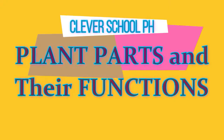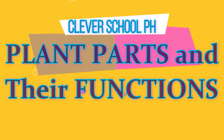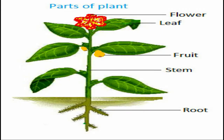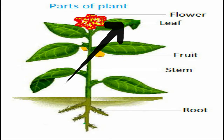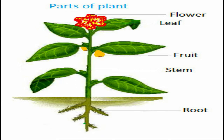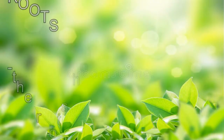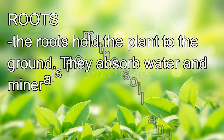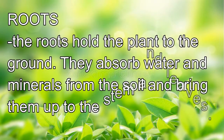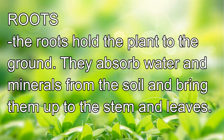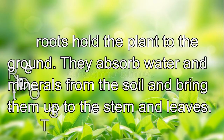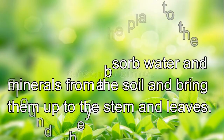Plant parts and their functions. Let us now study the characteristics of roots, leaves, stems, and flowers of plants. The roots hold the plant to the ground. They absorb water and minerals from the soil and bring them up to the stem and leaves.